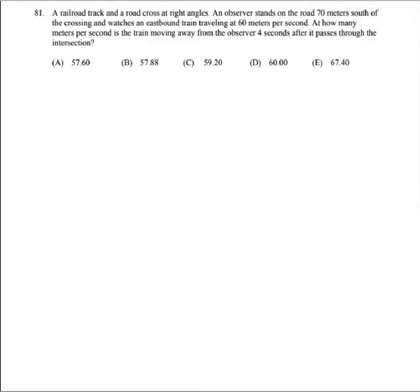A railroad track and a road cross at right angles. An observer stands on the road 70 meters south of the crossing and watches an eastbound train traveling at 60 meters per second. At how many meters per second is the train moving away from the observer four seconds after it passes through the intersection?